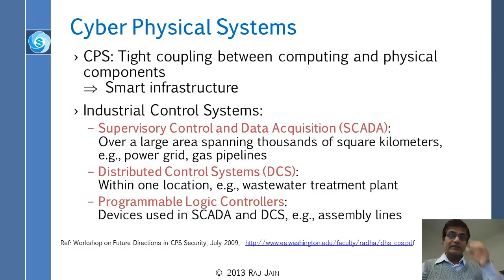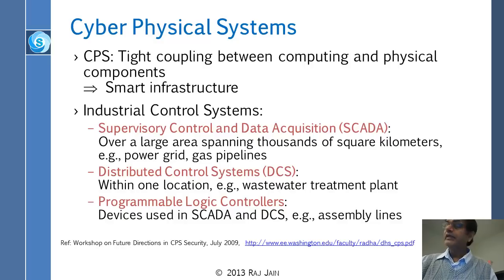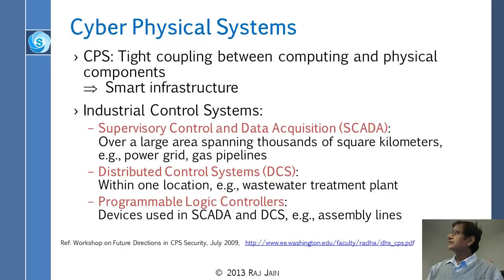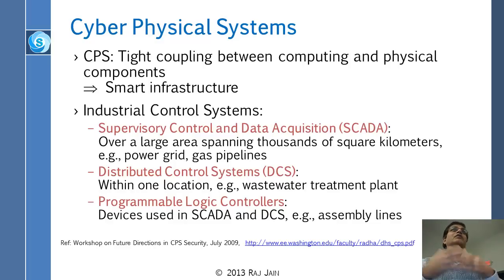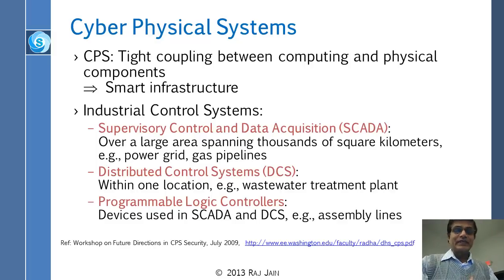Industrial control systems — such as a factory — are all CPS. You have SCADA for large geographic areas, spanning thousands of kilometers. In a smaller location like a power plant or water treatment plant, it is called DCS — Distributed Control Systems. Even smaller than that is called PLC — Programmable Logic Controllers — which is basically a single device. All of these hierarchically make up industrial control systems.